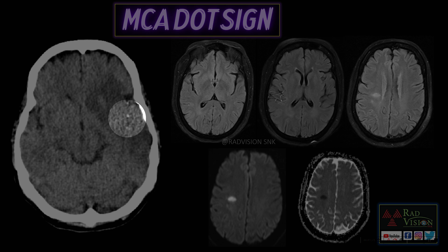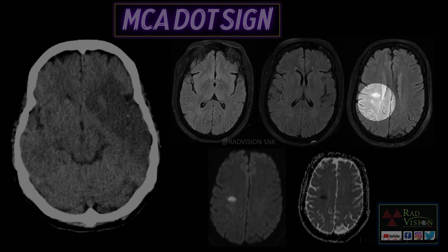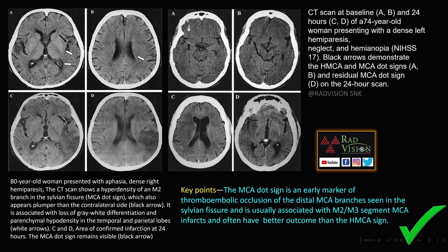Next is the MCA dot sign. Here you can see a hyperdense area noted within the sylvian fissure on the left side — the MCA dot sign — with infarct in the M2 segment of the left MCA. In another case, FLAIR hyperintense signal is noted in the M2 segment and cortical M3 branches of the MCA, with restricted diffusion and low ADC values. Whenever you see hyperintense areas in the MCA, search for infarcts in the M2 and M3 segments.